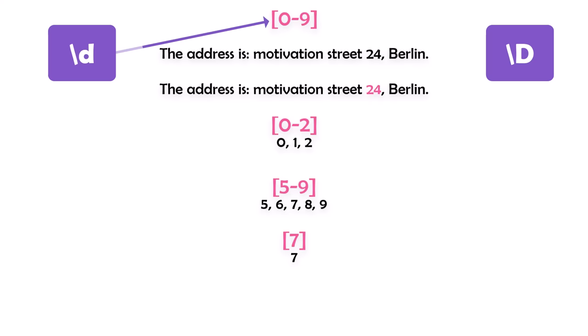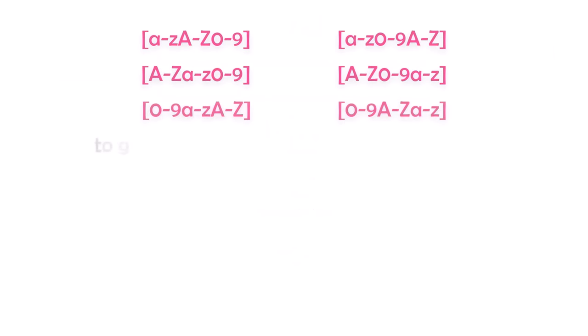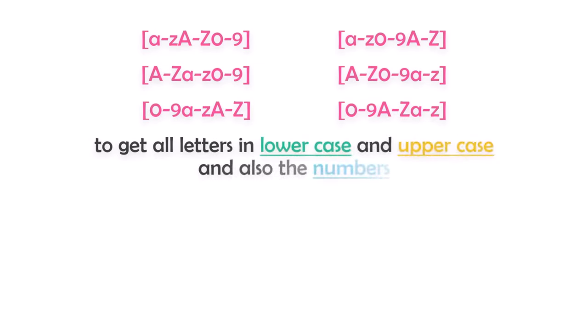We also have \D with an uppercase D, which matches any character except digit numbers. To get all letters in lower and uppercase plus numbers, we can use patterns like [a-zA-Z0-9] — all these combined patterns are the same. The order inside the pattern is not important. You can also use sub-ranges, for example to get letters from C to G in both cases and numbers between 3 and 7, or letters A-D lowercase plus L-X uppercase plus digits 5-8.